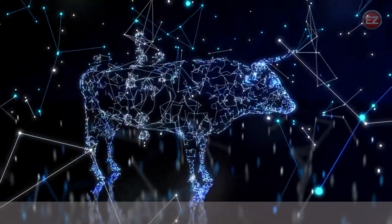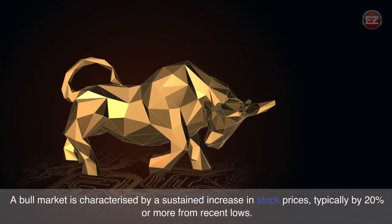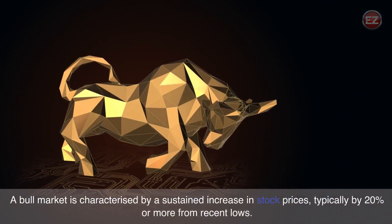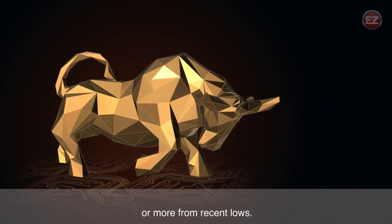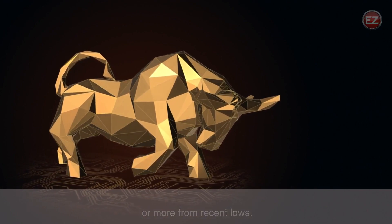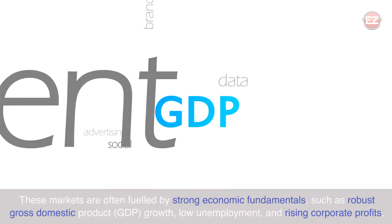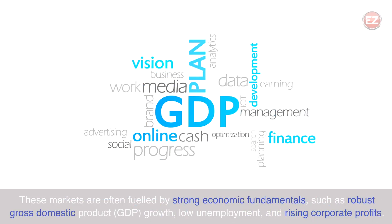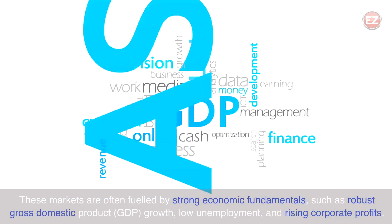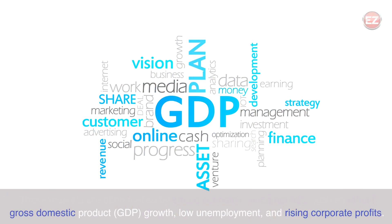A bull market is characterized by a sustained increase in stock prices, typically by 20% or more from recent lows. These markets are often fueled by strong economic fundamentals such as robust GDP growth, low unemployment, and rising corporate profits.